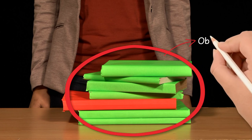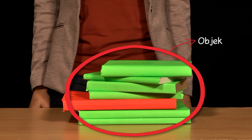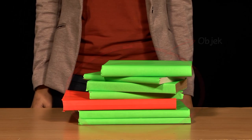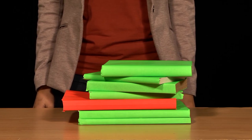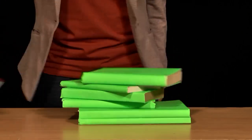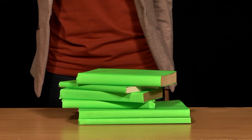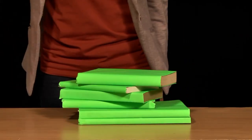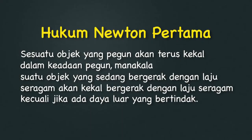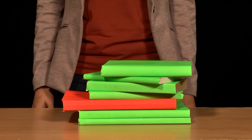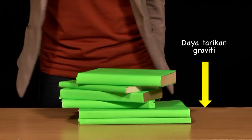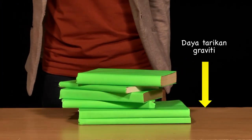Situasi satu. Objek ini berada dalam keadaan pegun. Apa akan terjadi jika salah satu buku yang berada di bahagian bawah ditarik dengan pantas? Buku-buku lain di bahagian atas tidak bergerak bersama-sama buku yang ditarik dengan cepat. Ini kerana, menurut hukum Newton pertama, buku-buku tersebut ada keupayaan untuk kekal dalam keadaan pegun dan tidak bergerak bersama. Buku-buku di atasnya jatuh ke bawah disebabkan oleh daya tarikan graviti.